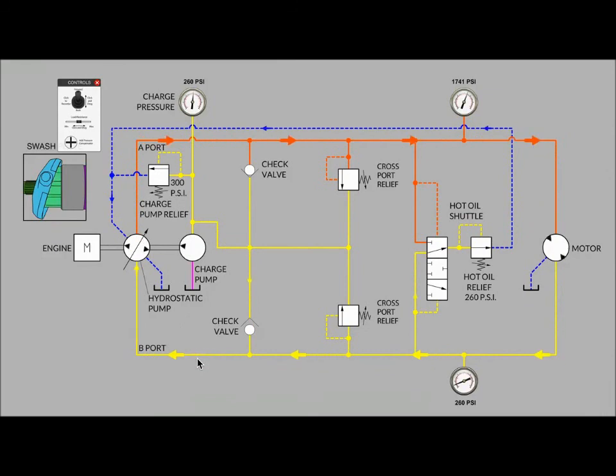We find out that the pressure on the return side of the closed loop is being held at 260 by the hot oil shuttle relief valve over here on the right side of the circuit. It's set to 260. It needs to be set a little bit lower than the charge pump relief valve. Otherwise, you will not have fluid leaving the main hydrostatic loop for returning to tank where it can be cooled. So it's important to let fluid out of the hydrostatic loop. And in fact, the flow from the charge pump has to go somewhere.